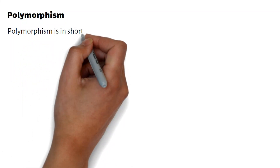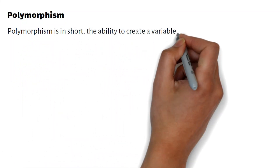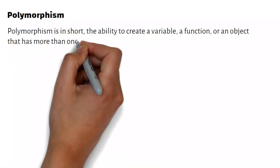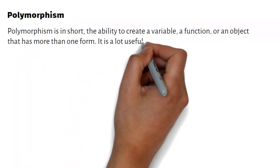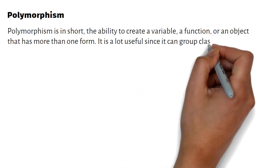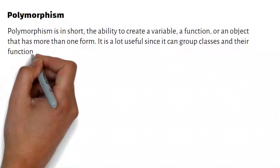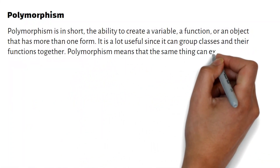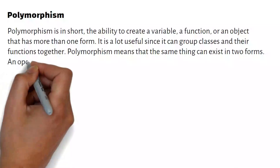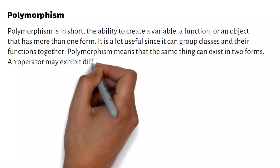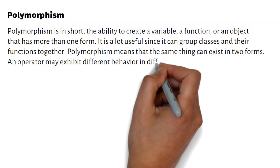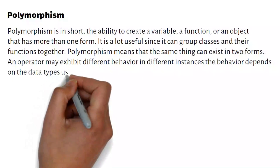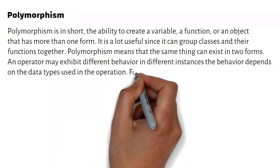Polymorphism. Polymorphism is, in short, the ability to create a variable, a function, or an object that has more than one form. It is very useful since it can group classes and their functions together. Polymorphism means that the same thing can exist in two forms. An operator may exhibit different behavior in different instances; the behavior depends on the data types used in the operation. For example, considering the operator plus.